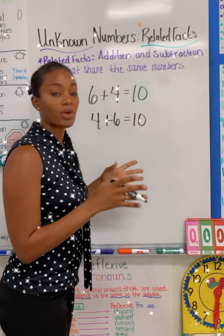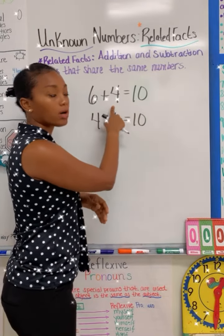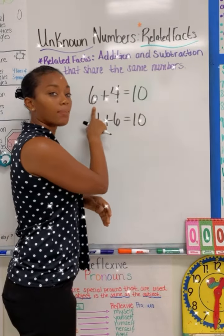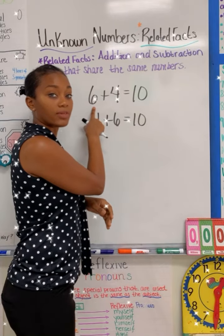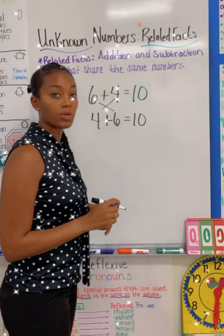When you reverse the numbers, you have to be careful. You cannot put 10 plus four or 10 plus six, because that's going to give you a different sum. These addends are the only ones that you can change.